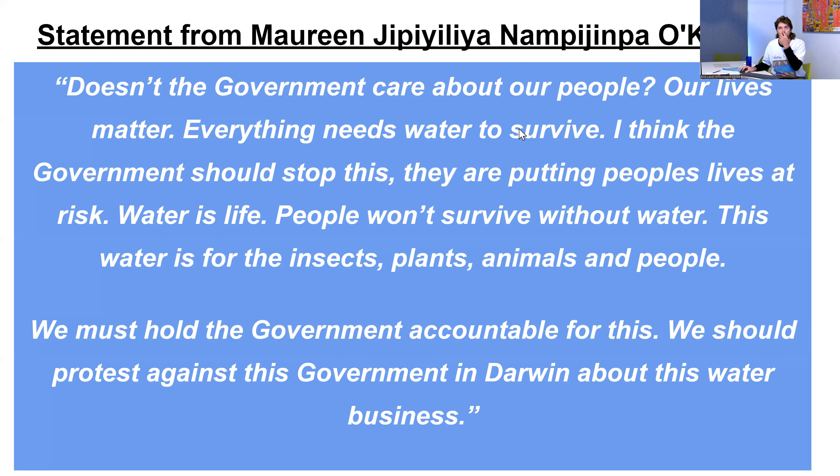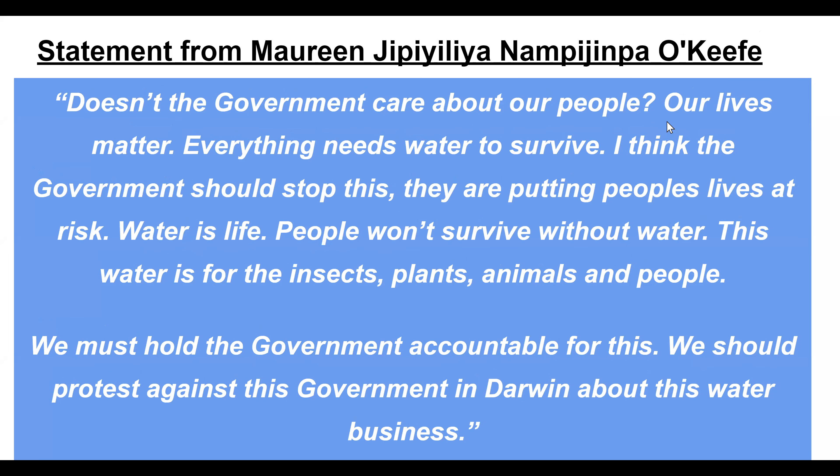I'd like to start with Maureen Nappajimpa O'Keefe. I'm very fortunate to work closely with her — she had hoped to be here today but is unfortunately unwell. She provided this short statement: 'Doesn't the government care about our people? Our lives matter. Everything needs water to survive. I think the government should stop this. They are putting lives at risk. Water is life. People won't survive without water. This water is for the insects, plants, animals and people. We must hold the government accountable for this.'